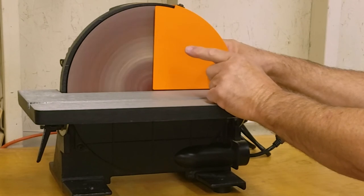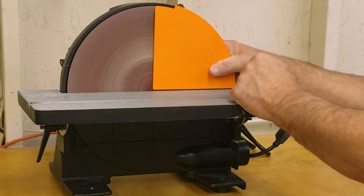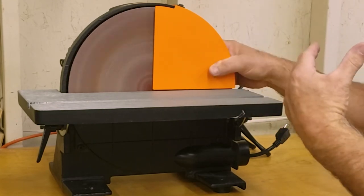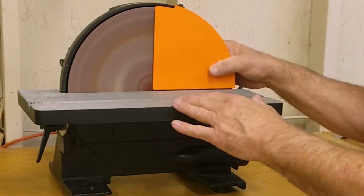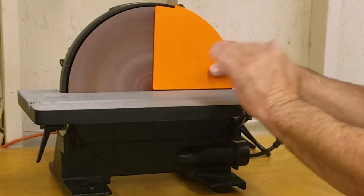Again, that's a 60 grit disc and it will take off material in a hurry. So if you are doing something very delicate, be aware that that disc will take off material extremely quickly.